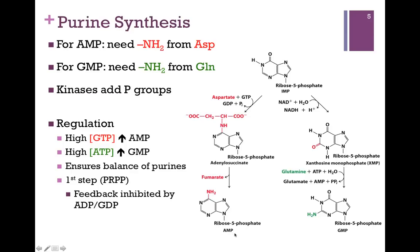On the right, in the formation of GMP, we first add water and oxidize to form a carbonyl, then replace that carbonyl with an amine group from glutamine, and this requires hydrolysis of ATP. The easiest way to keep these apart: formation of AMP requires aspartate, and formation of GMP requires glutamine.